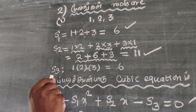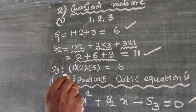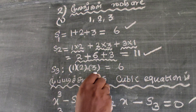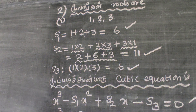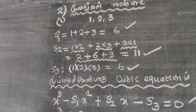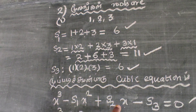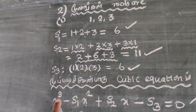S3 is the product of all 3 roots: 1 into 2 into 3, which equals 6. The cubic equation formula is x cube minus S1 x square plus S2 x minus S3 equal to 0.